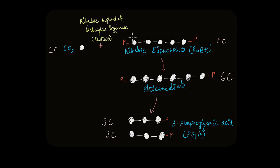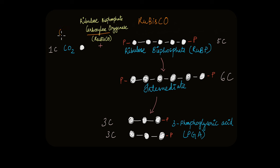The Calvin cycle involves one of the most important enzymes: ribulose bisphosphate carboxylase oxygenase, abbreviated as rubisco — RU for ribulose bisphosphate, C for carboxylase, and O for oxygenase. This enzyme, coincidentally the most abundant protein on earth, begins the Calvin cycle. From the name itself, it has two functions: it can catalyze a carboxylation reaction (addition of CO2) or an oxygenation reaction (addition of oxygen). In this video, we'll focus on the carboxylation aspect of rubisco.